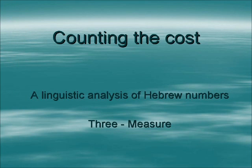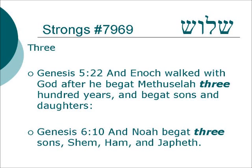Shalom and welcome to Counting the Cost, a linguistic analysis of Hebrew numbers. Today we will do the number three, which is associated with the idea of measurement. The word for three in Hebrew is shalosh, Strong's number 7969, and it means a literal three.